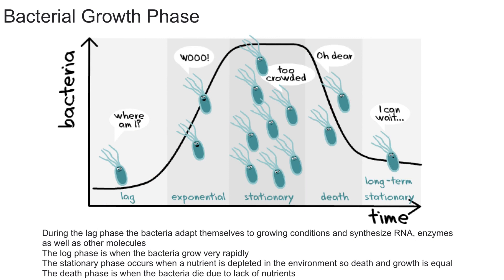This carrying capacity is due to a limited amount of nutrients. Two things occur during the stationary phase: nutrients are consumed, and toxic waste products are released. As a result, you can't have continuous exponential growth forever — as time goes on, more and more nutrients are used up.